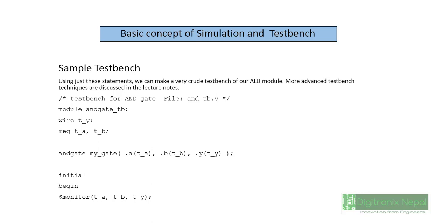Here we have a very basic sample test bench. We are going to utilize this test bench for simulating an AND gate. We also have a design of an AND gate from the previous lab, which is lab 1. In this upcoming lab, lab 2-1, we are going to design the AND gate again and create a simulation test bench using this source, and we are going to generate the waveform for that AND gate.